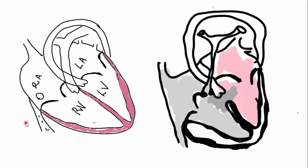Hi there. This is the tutorial on Petrology of Fallot. Let's start off by looking at a normal heart on this side of the screen. Your deoxygenated blood would come through the inferior vena cava and superior vena cava into the right atria.